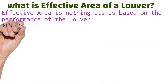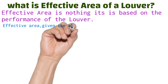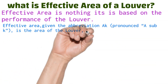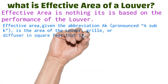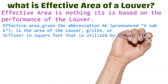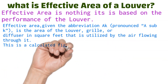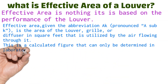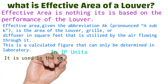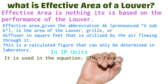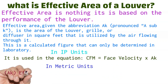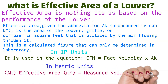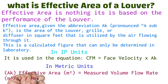What is the effective area of a louver? Effective area is based on the performance of the louver. Effective area, given the abbreviation A_k (pronounced 'A sub k'), is the area of a louver, grille, or diffuser in square feet that is utilized by the air flowing through it. This is a calculated figure that can only be determined in a laboratory.